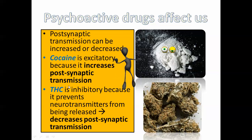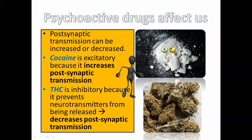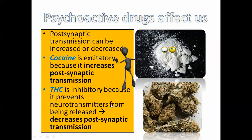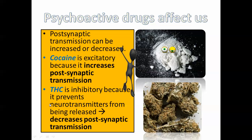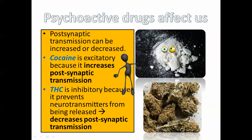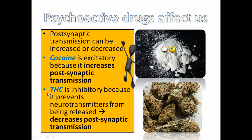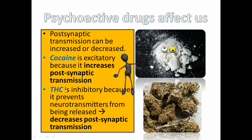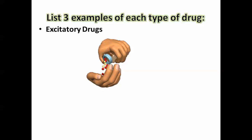THC, on the other hand — which is the active ingredient in cannabis or marijuana — is inhibitory because it actually delays neurotransmitters from moving across. In order for a message to be transmitted from one neuron to another, neurotransmitters have to diffuse across that gap. So if you do something to interfere with that, you're probably going to be decreasing the excitation of the actual nervous system. So let's look at cocaine and THC in detail — but first, just a quick list.